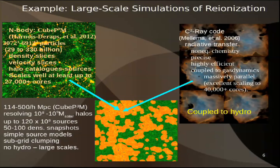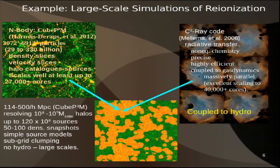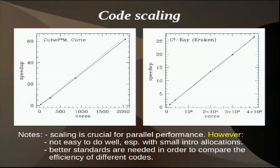What we do currently — not fully coupled — is run very large N-body simulations, currently up to 330 billion particles. We get all the information about the halos, density, and halo catalogs. This kind of simulation scales up to 27,000-plus cores, so they are of petascale size. On top of this, we run radiative transfer and non-equilibrium chemistry, which also scales up to tens of thousands of cores — 40,000 and above. Volumes are at least 100 megaparsecs, and we are shooting for up to 500.